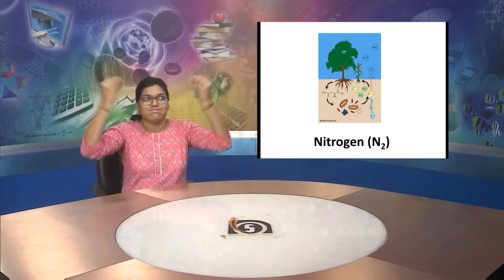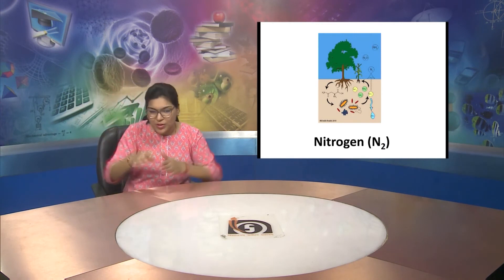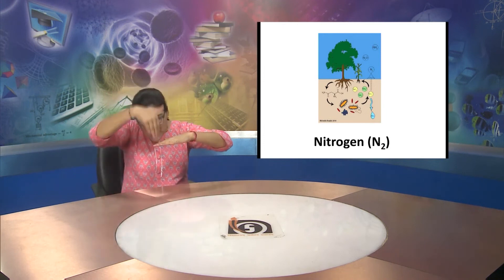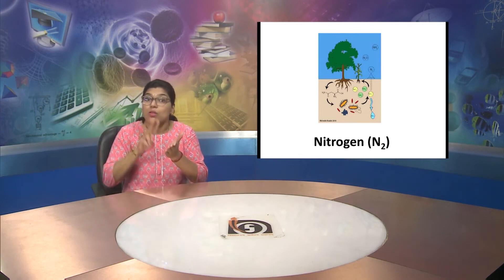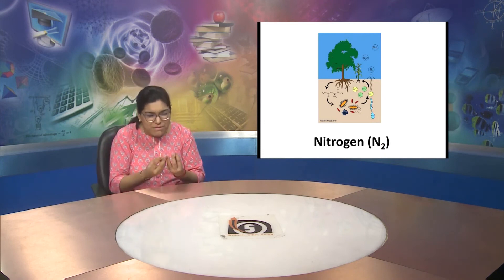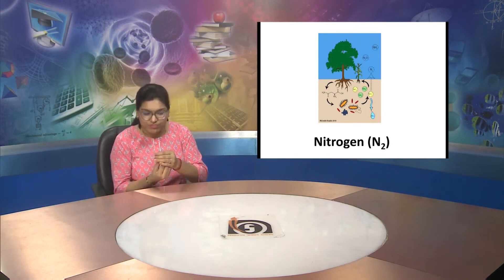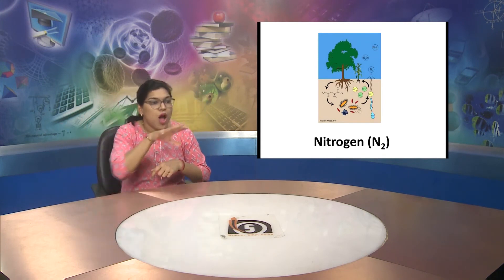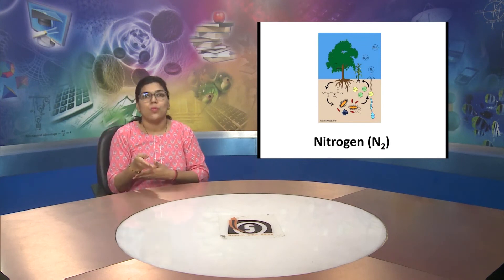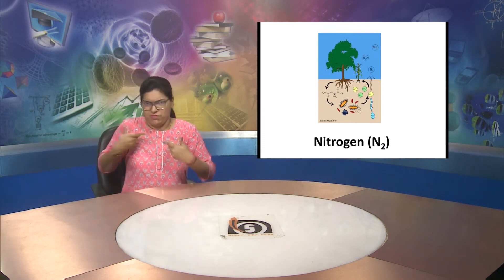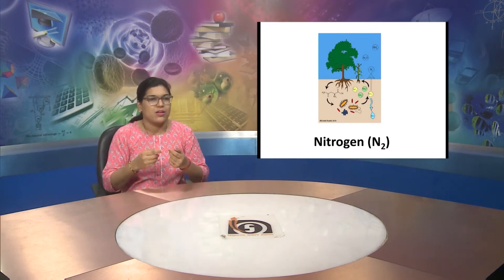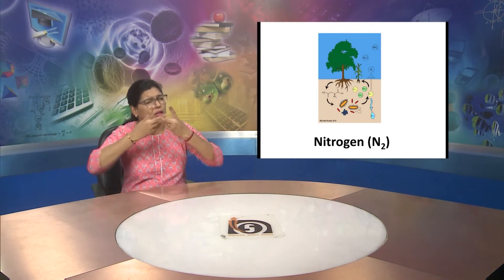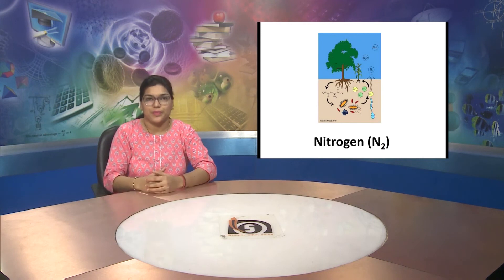N2 helps microbes living under the soil and when sometimes the acidic rain happens we also see nitrogen in that. Nitrogen helps microorganisms to grow. Everything like vegetables, all whatever we eat have nitrogen in it.